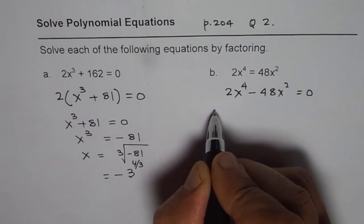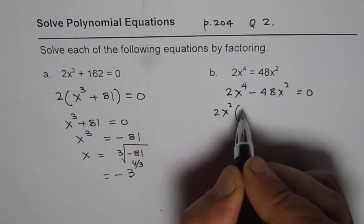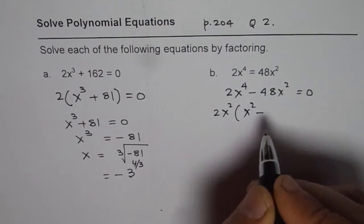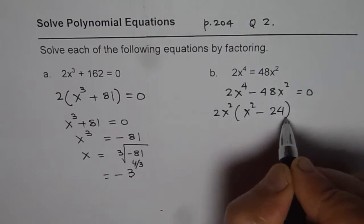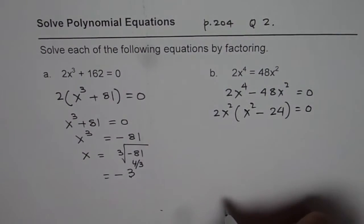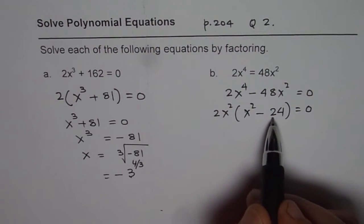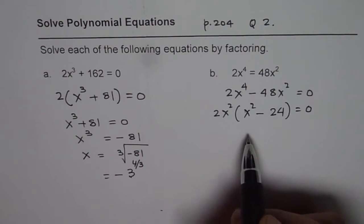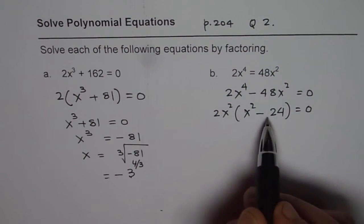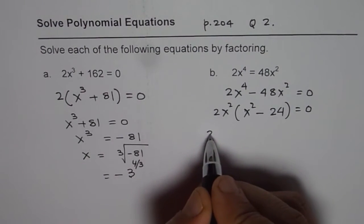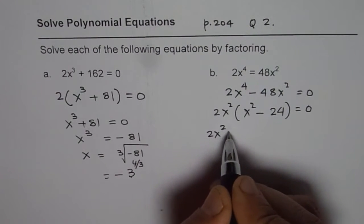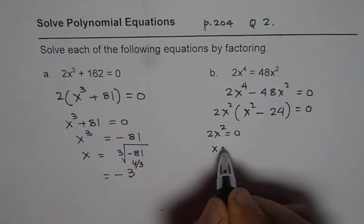Now, 2x² is common. Let us factor 2x² out. So we are left with x² - 24 = 0. Here, again, 24 is not a perfect square. So we will equate each factor to 0. The first factor is 2x². If we equate 2x² to 0, we get x = 0.